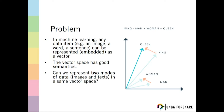This vector space has good semantics. See the image on the right — we can represent words using a two-dimensional vector in a two-dimensional space. We have the words king, man, woman, and queen. We can do vector addition and subtraction so that king minus man plus woman equals queen. That is the semantics I'm talking about.